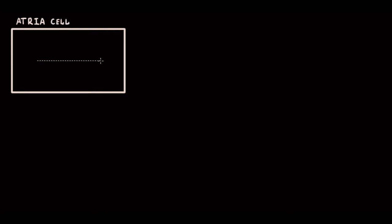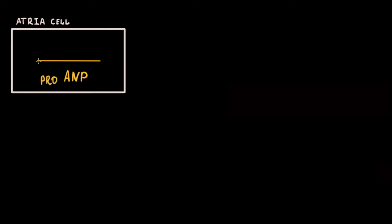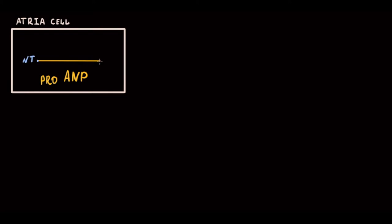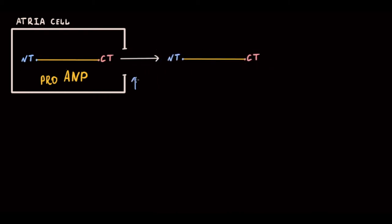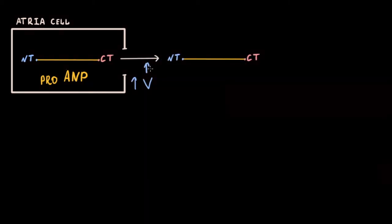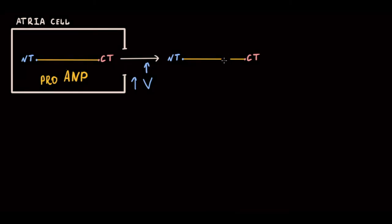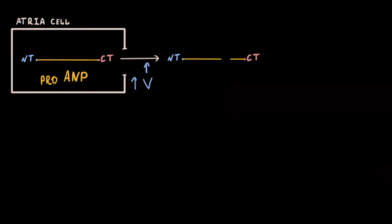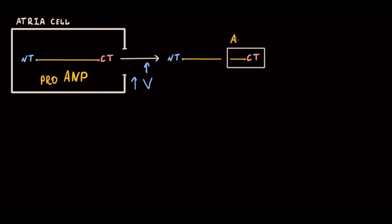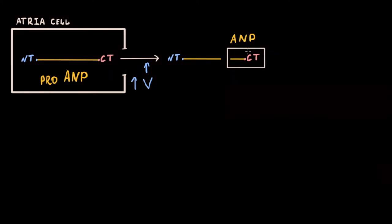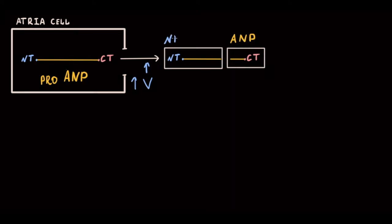In the atria, ANP is stored in an active pro-NP form, which has two terminals: N-terminal and C-terminal. It is released in response to increased blood volume in the atria and divides into two parts. The C-terminal part is active ANP, and the N-terminal pro-NP part is the inactive one.